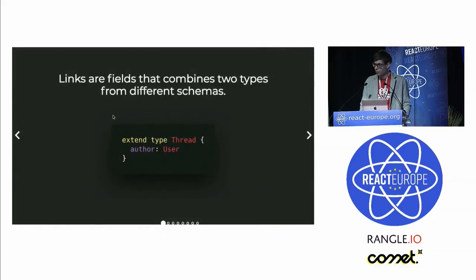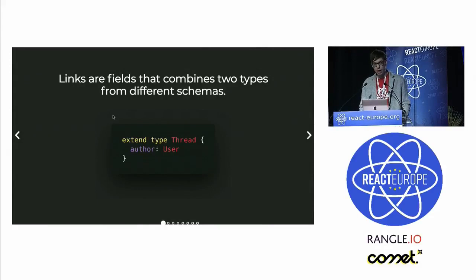Schema stitching is the way to accomplish this. There are a few concepts with schema stitching I'd like to go over. First, there are links, which are basically fields that extend your existing types and add new fields to them — like in this example, we're adding the 'author' field to the 'thread' type.